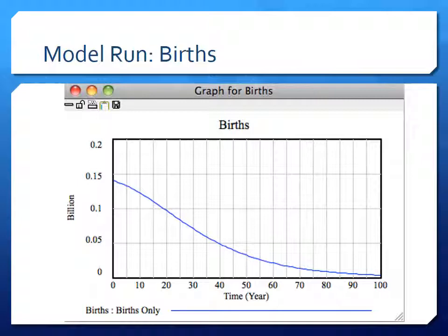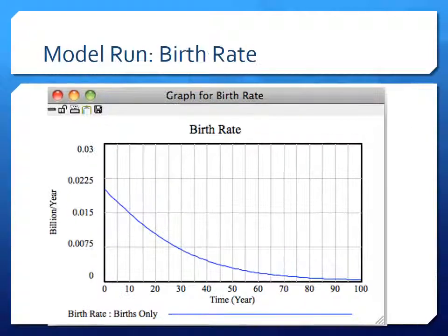The 0.004 logistics rate is chosen to match that birth figure. Births over time taper down, and essentially 100 years from now we're not adding many people because we've reached capacity. That tapering off to zero reflects world population reaching capacity. Looking at the birth rate similarly shows a declining trend — tapering off fairly quickly.